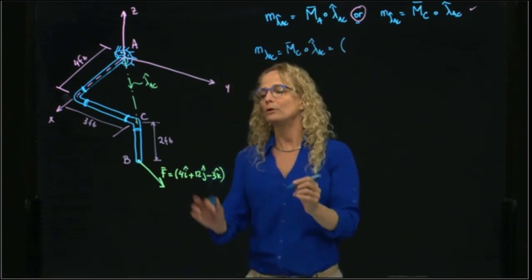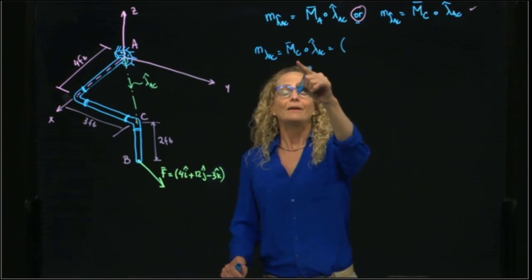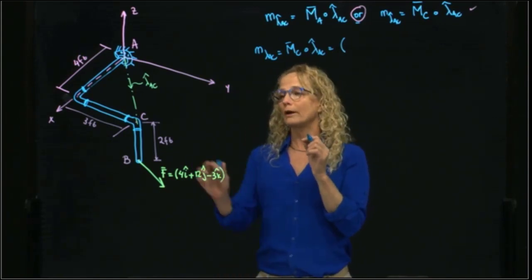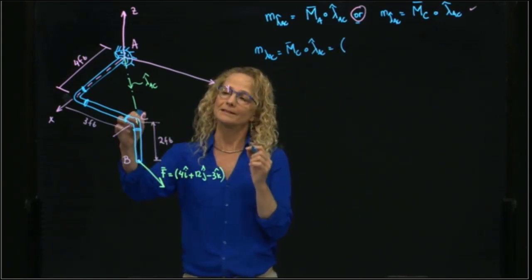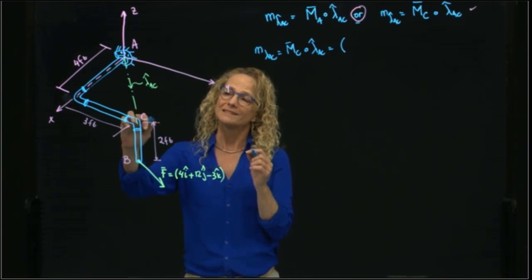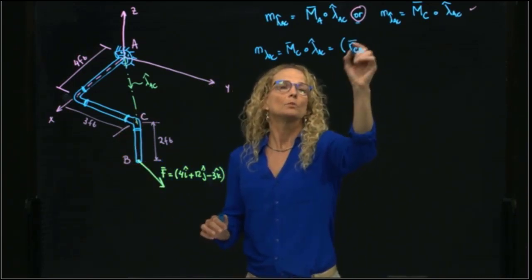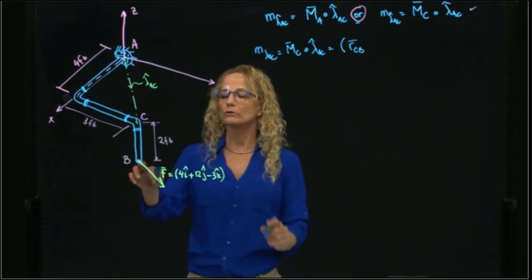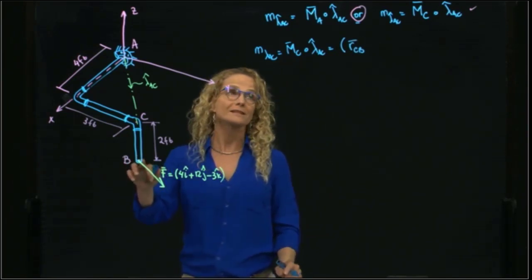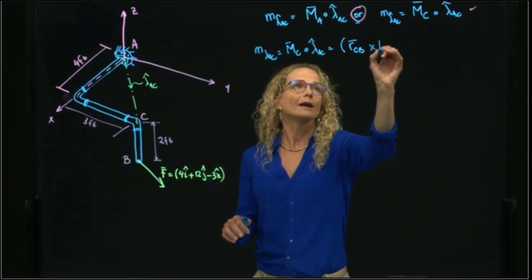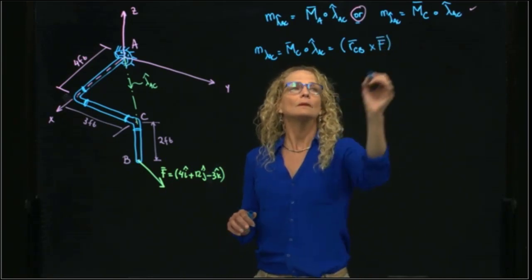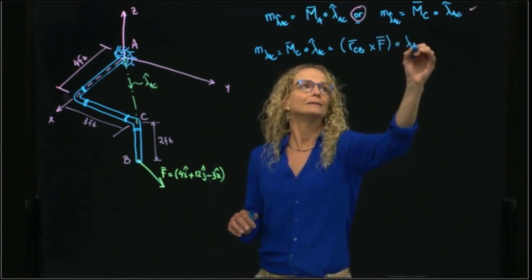The moment at C will be equal to the distance vector from C to B, which is where I'm taking the moment to the point where the force is located, cross F, dot AC.